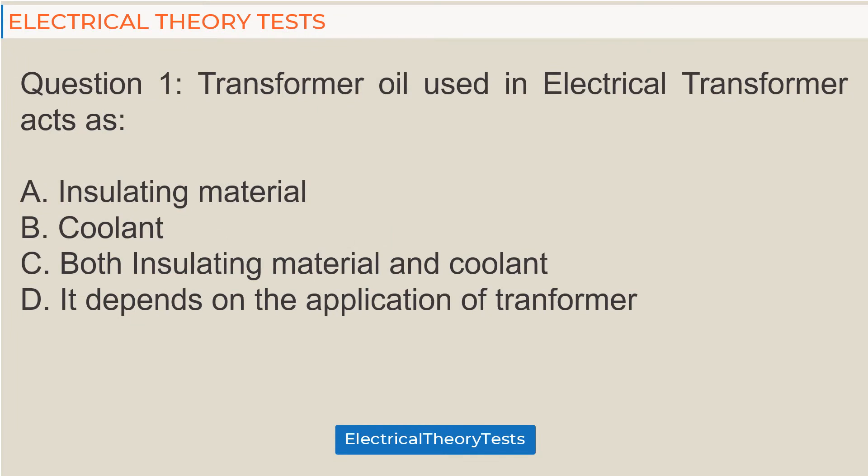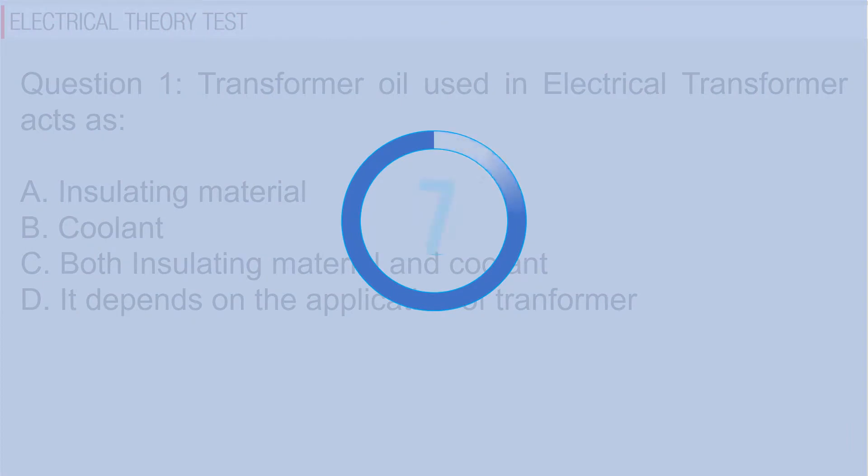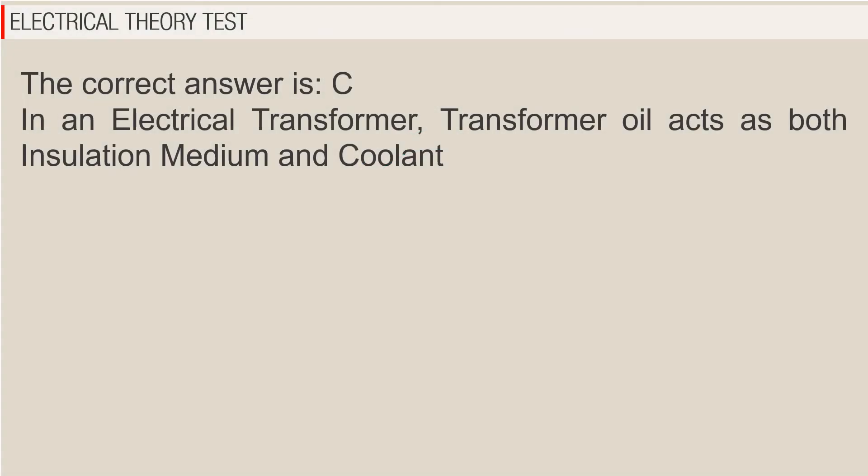Question 1: Transformer oil used in electrical transformer acts as A. insulating material, B. coolant, C. both insulating material and coolant, D. it depends on the application of transformer. The correct answer is C. In an electrical transformer, transformer oil acts as both insulation medium and coolant.